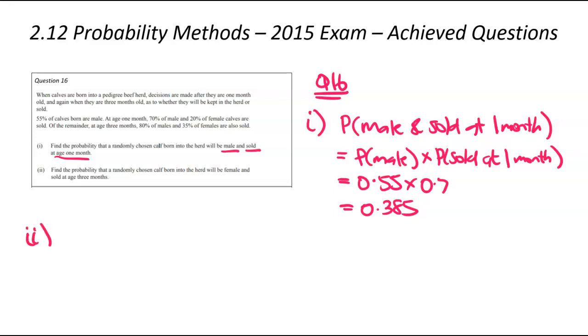We're now moving on to question two. Find the probability that a randomly chosen calf will be female and sold at the three month stage. This question's a bit trickier, because you might do the same approach here, except you might change that to female and that for three months. But there's a bit of a trick here.